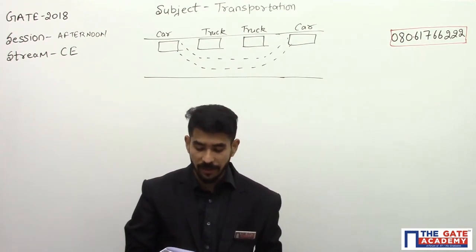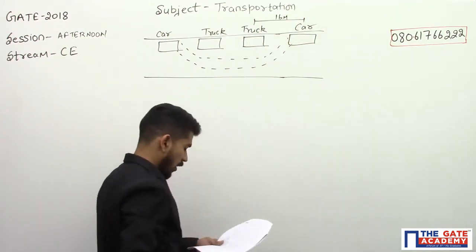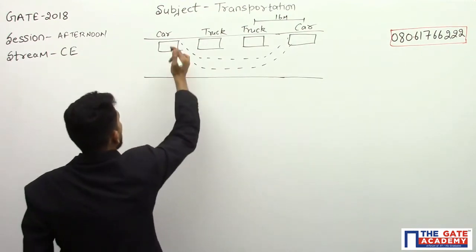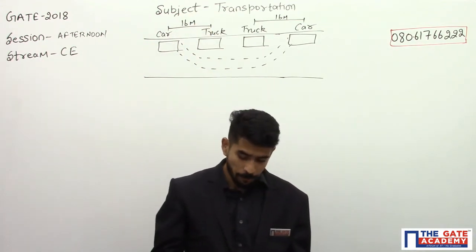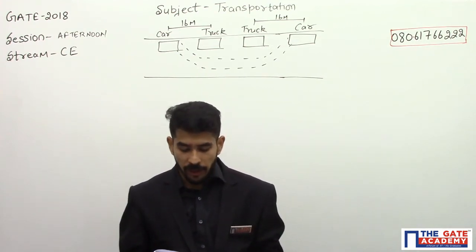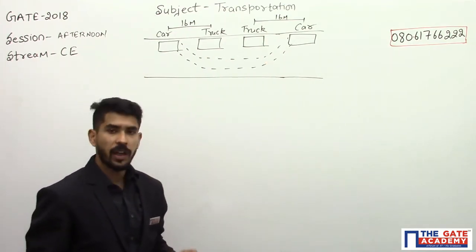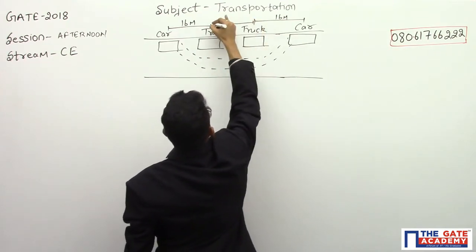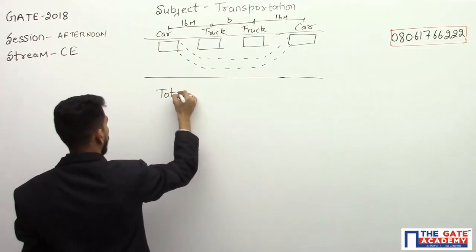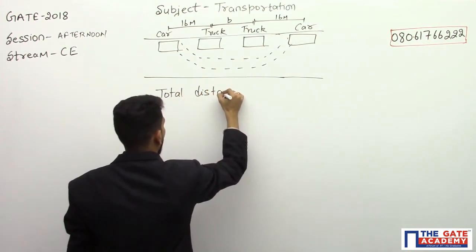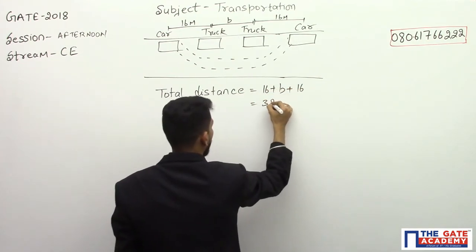When the car returns to its original lane, the distance between the car and the truck is 16 meters. Initially also, this distance was 16 meters. So the total distance traveled by the car during this period — from start to finish — is 16 plus b plus 16, which equals 32 plus b, where b is the distance the truck travels during the overtaking time t.